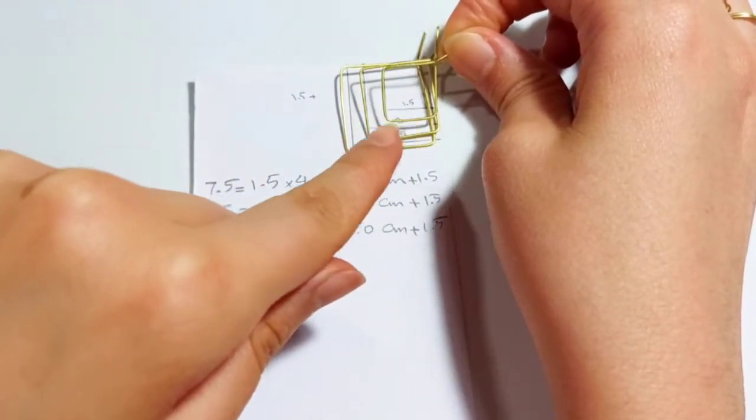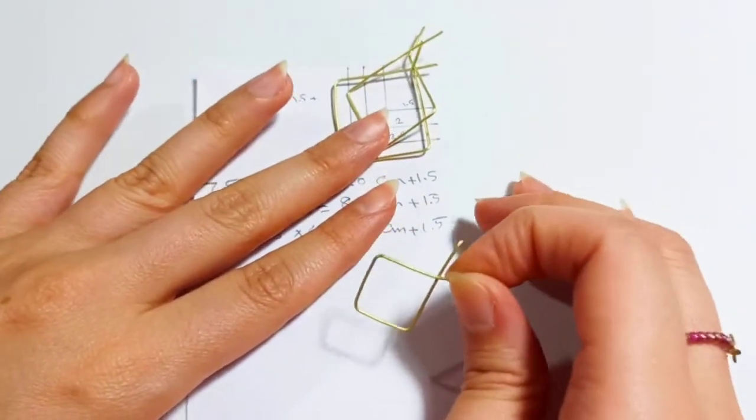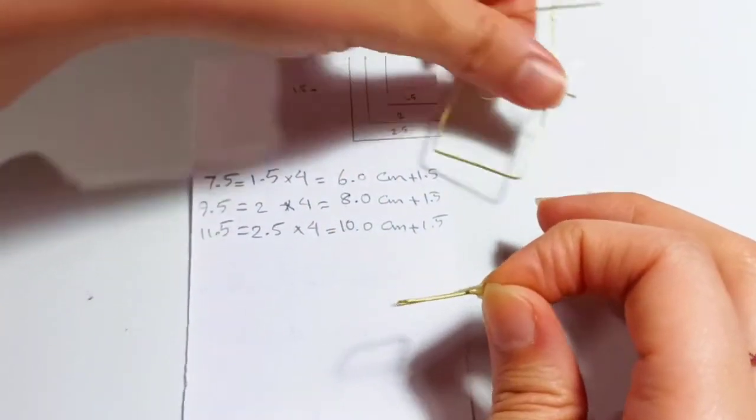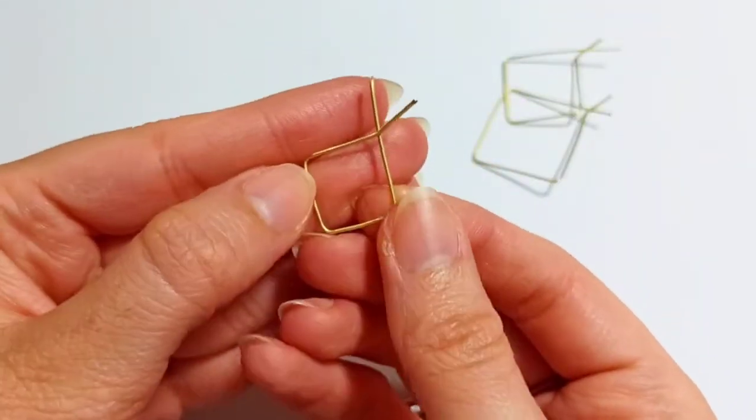We continue that for all three squares and each of them will look something like this.